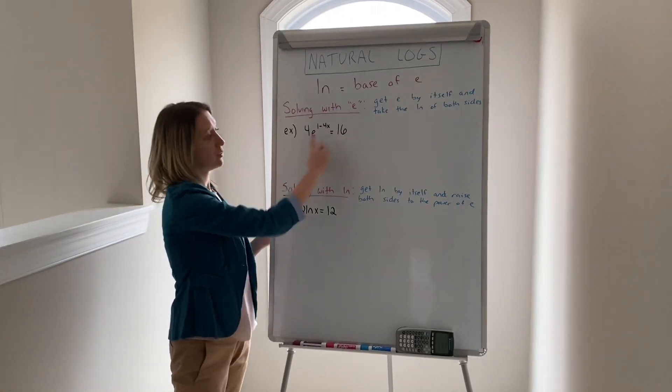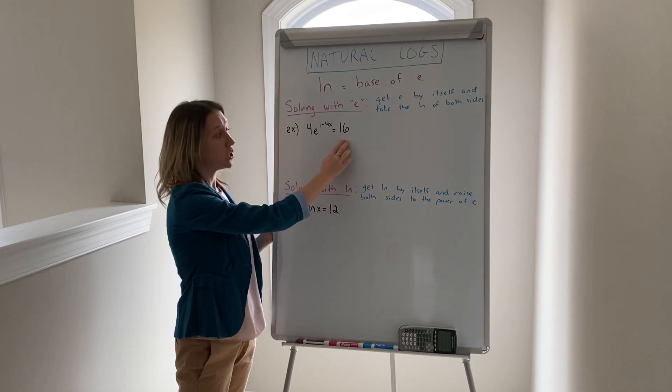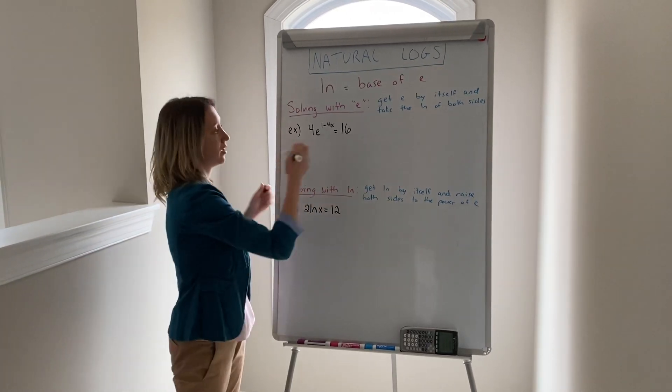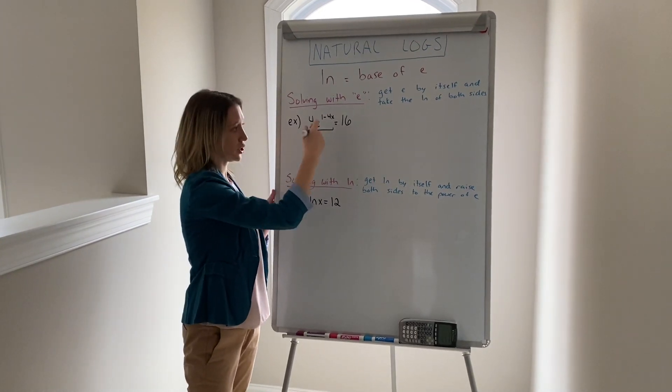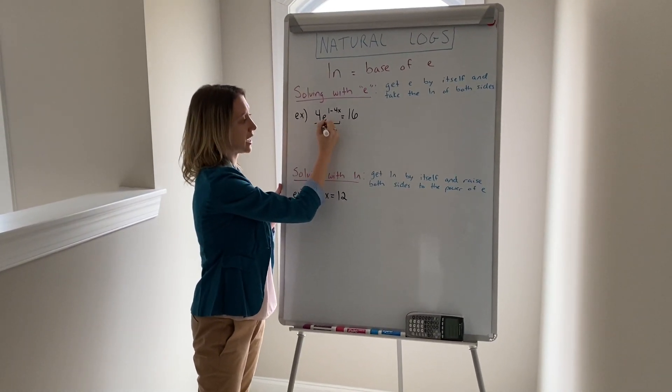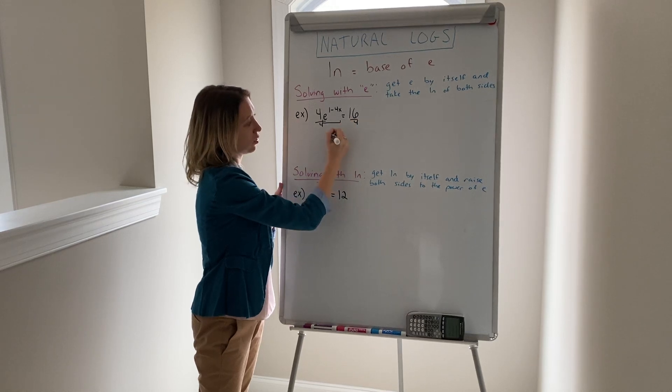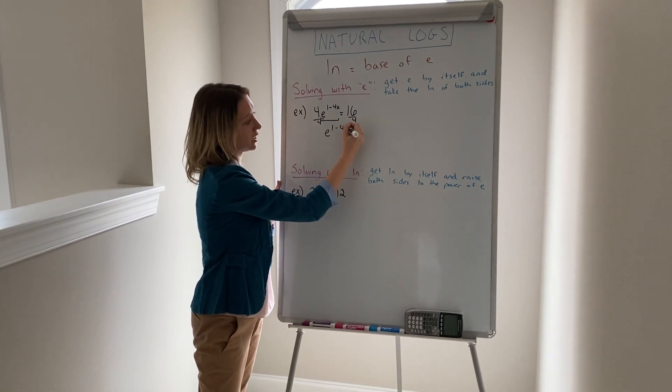If we are solving and we have e in the problem, what you want to do is get the e by itself first and then take the natural log of both sides. This is four times this expression. To get rid of it, I would divide both sides by four. So I have e^(1-4x) equals four.